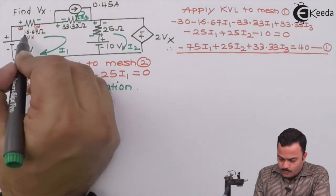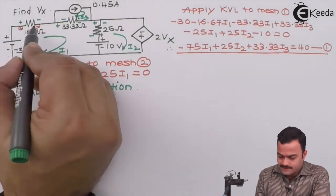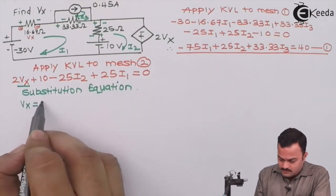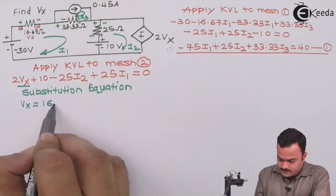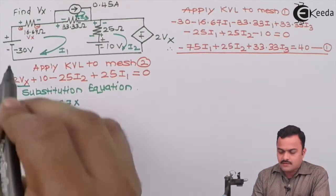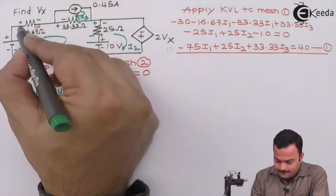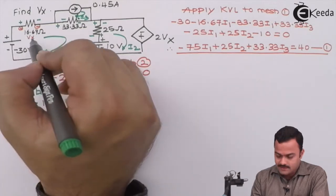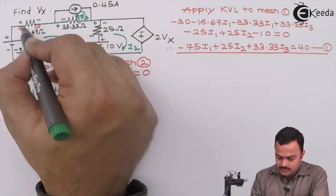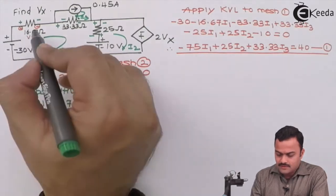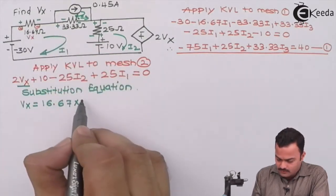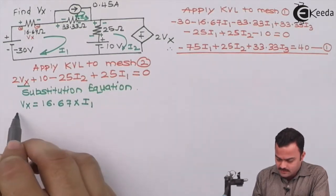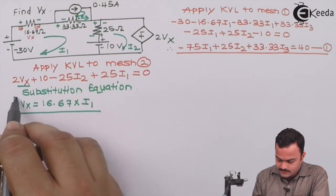So over here vx is given by them with this reading polarity, nothing but resistor 16.67 multiplied by current. Now the polarity given by them and the polarity that we mark depending upon the current flowing through it is matching. So if the polarity is matching, hence we'll have the current as i1 only positive value. So we can say vx is nothing but 16.67i1 as a substitution.